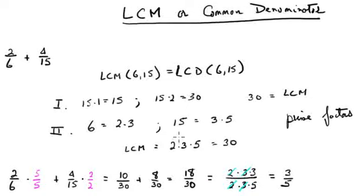The maximum number of 2s between these two is 1, the maximum number of 3s between these two is 1. There's only one 3 here and only one 3 here, and the maximum number of 5s is 1.